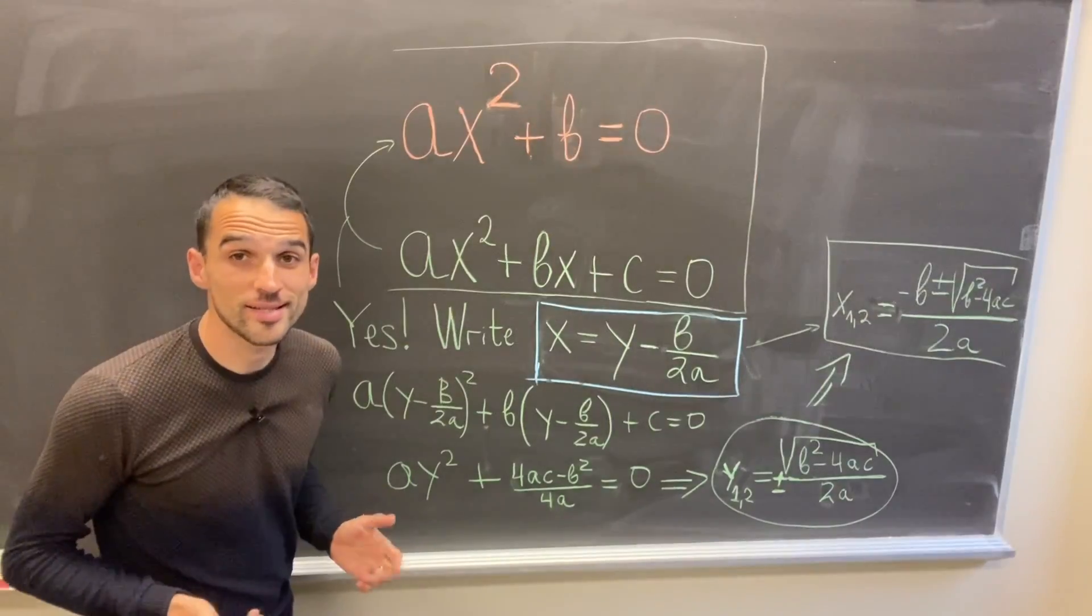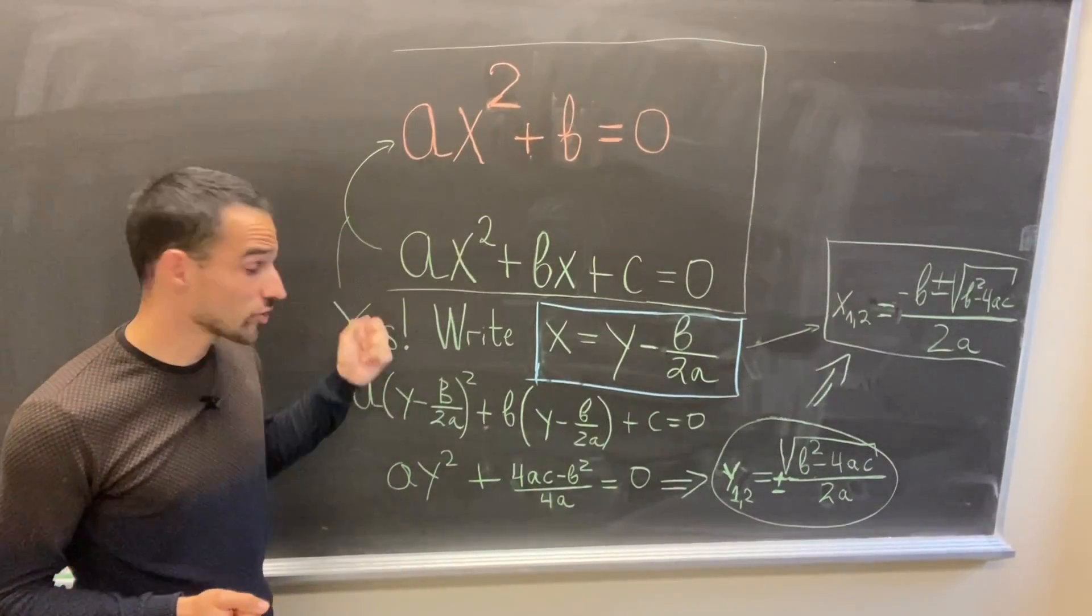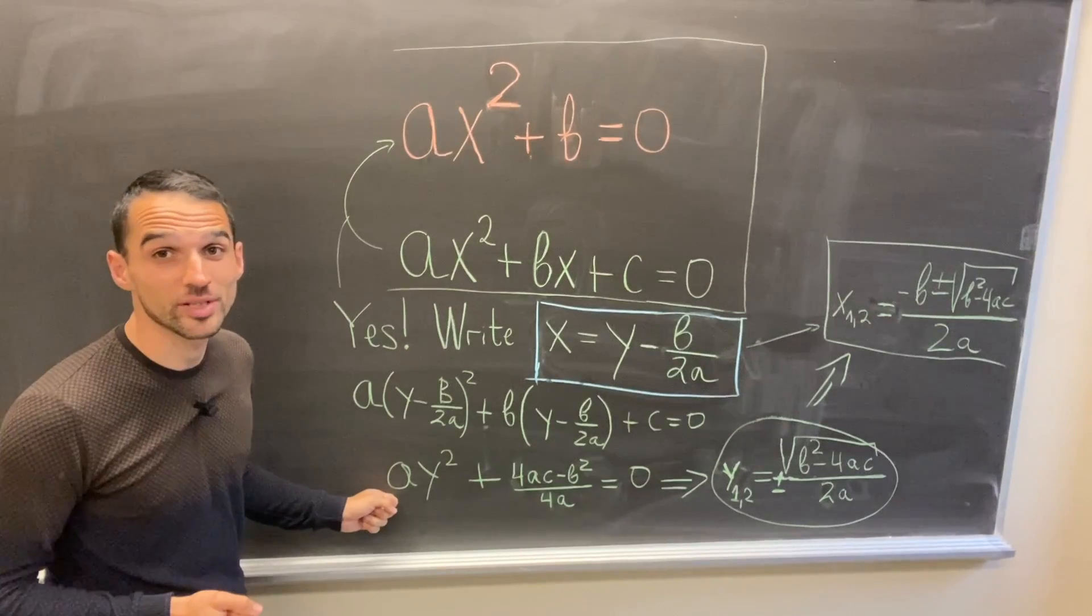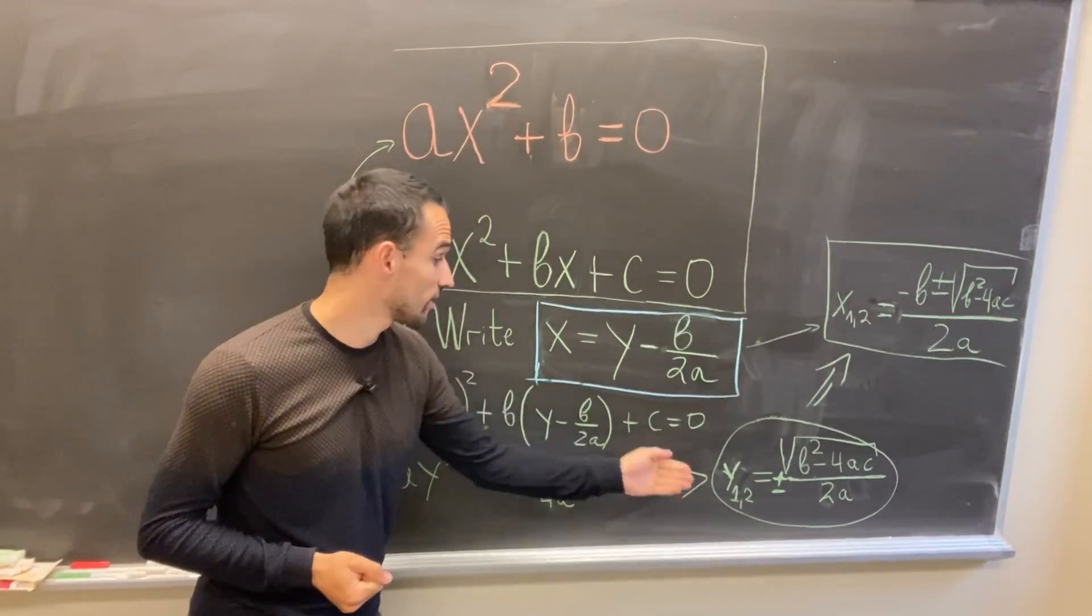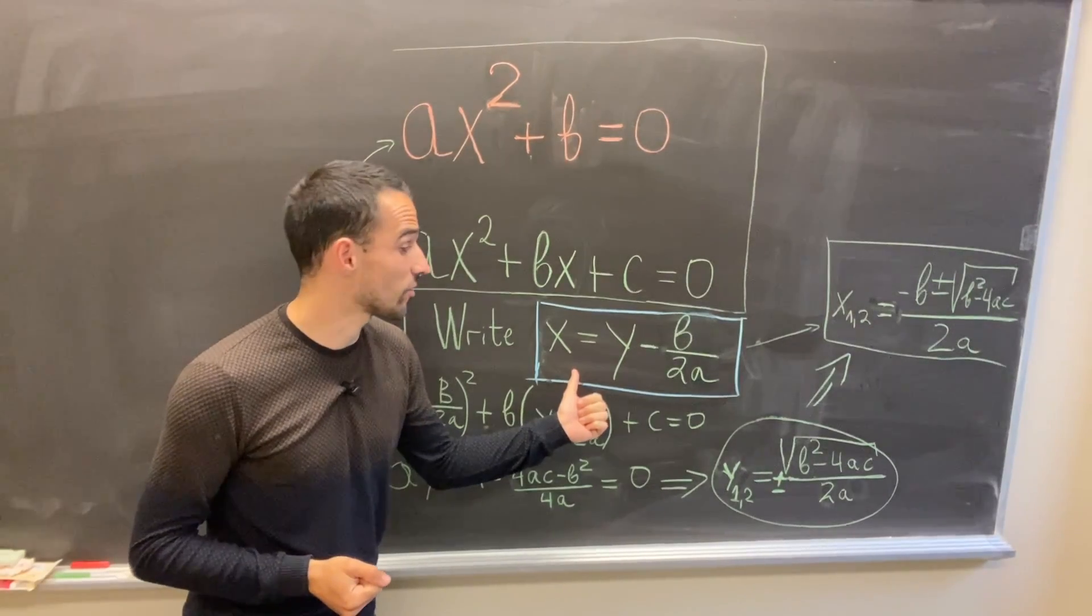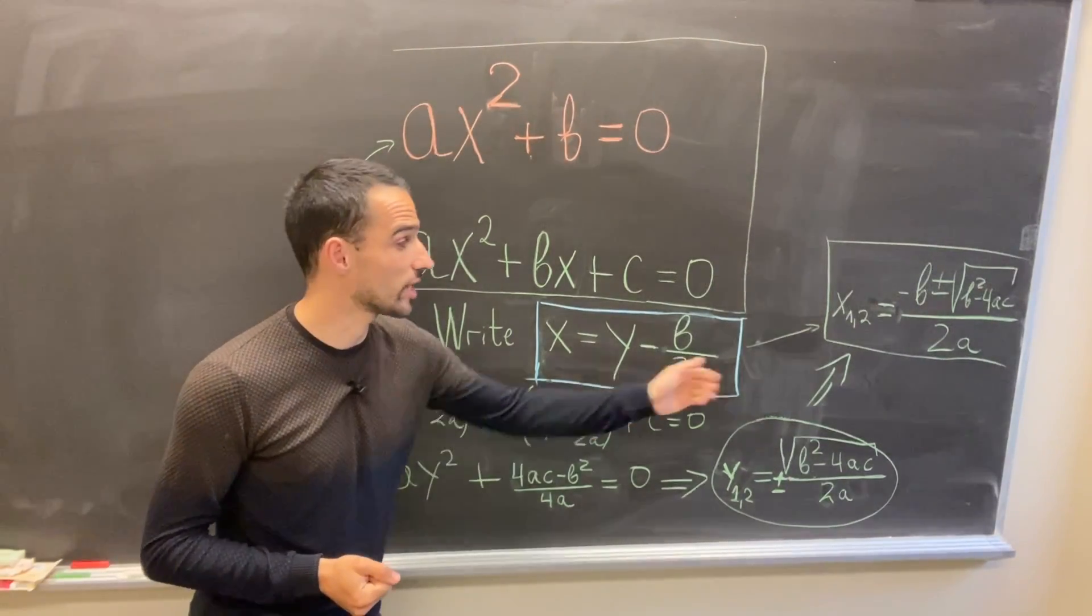So that's it—I convert my quadratic equation to a depressed quadratic with the right substitution, then I solve for y here. I need to find x at the end, so I use this substitution, and this is how I get the familiar quadratic equation formula.